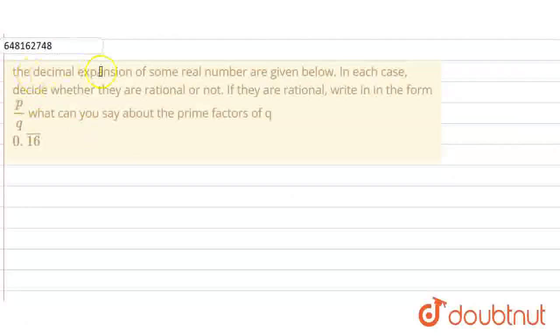Hello everyone, so the problem is that the decimal expansion of some real number is given below. In each case, decide whether they are rational or not. If they are rational, write in the form of p by q.